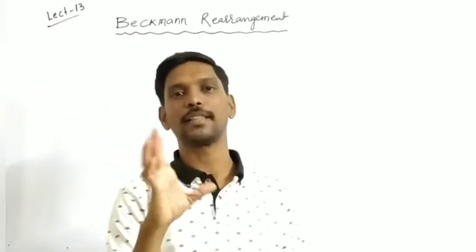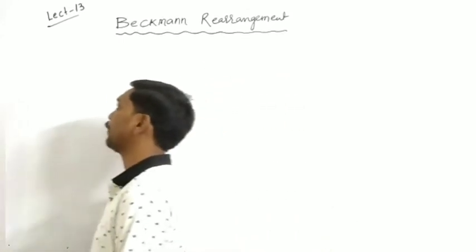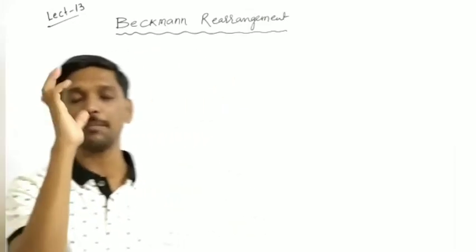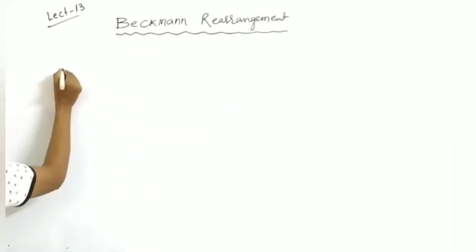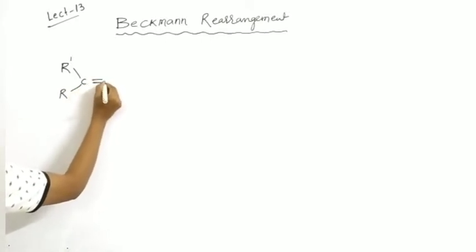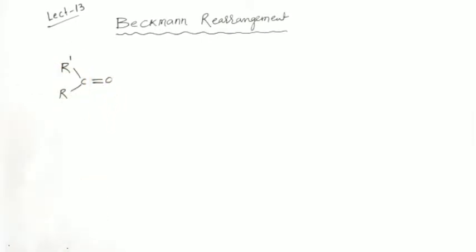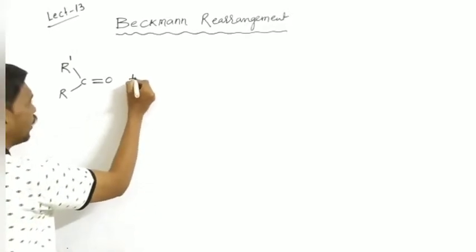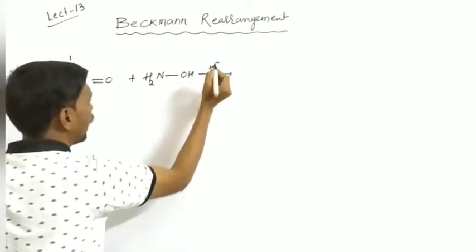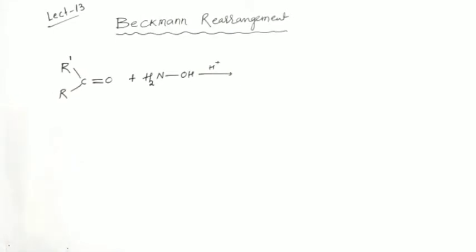Beckmann rearrangement can appear in board exams too. The general reaction: R'CR double bond O — it is a carbonyl compound — reacts with H2NOH (hydroxylamine) in the presence of acid.